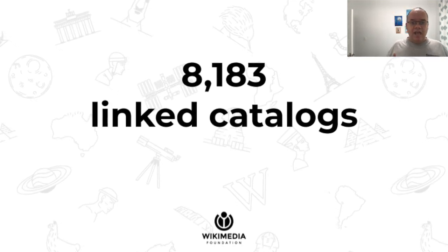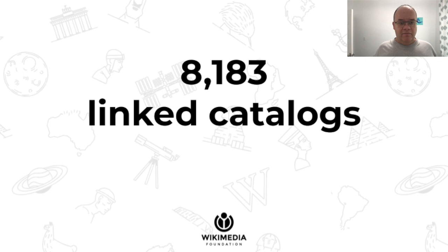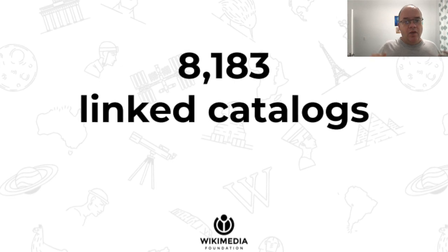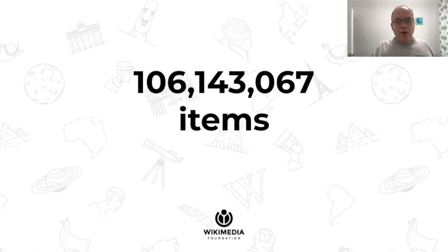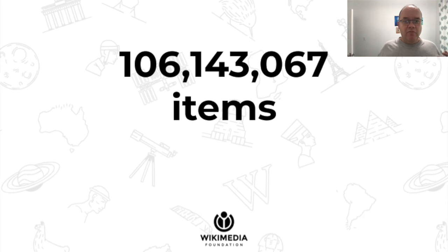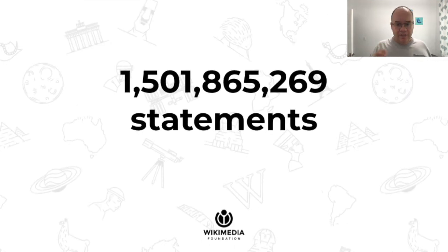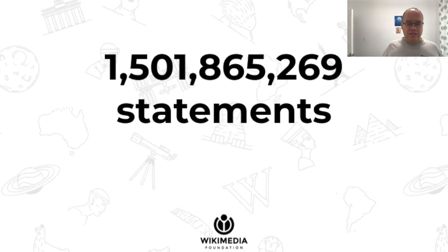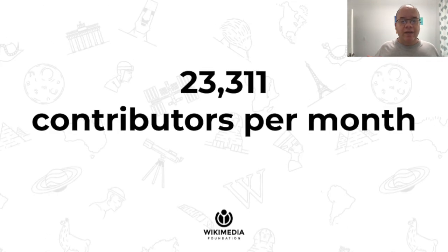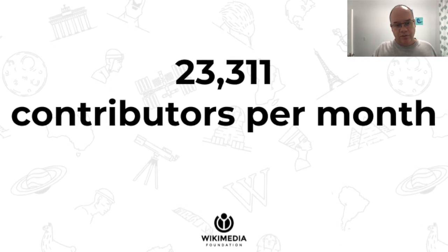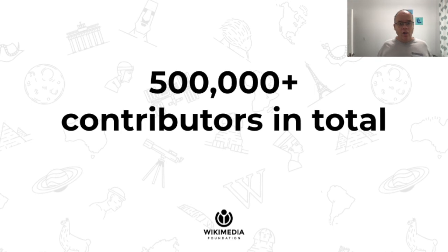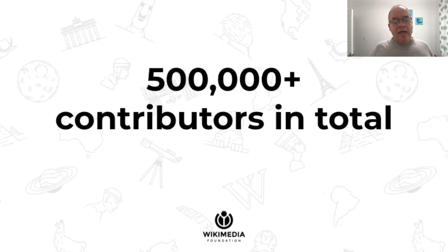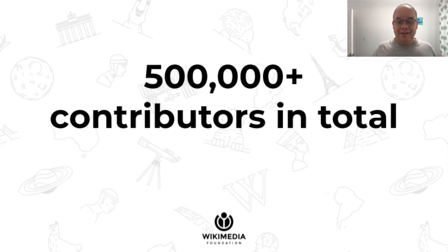Wikidata is easily the largest hub of shared identifiers on the web, allowing you to collect data from billions of pages. Wikidata describes more than 106 million items, with more than one and a half billion statements. Wikidata is, like all our projects, driven by volunteers, and we have more than 23,000 monthly contributors on Wikidata. Overall, more than half a million people have contributed to Wikidata so far, a number I personally find absolutely astonishing.